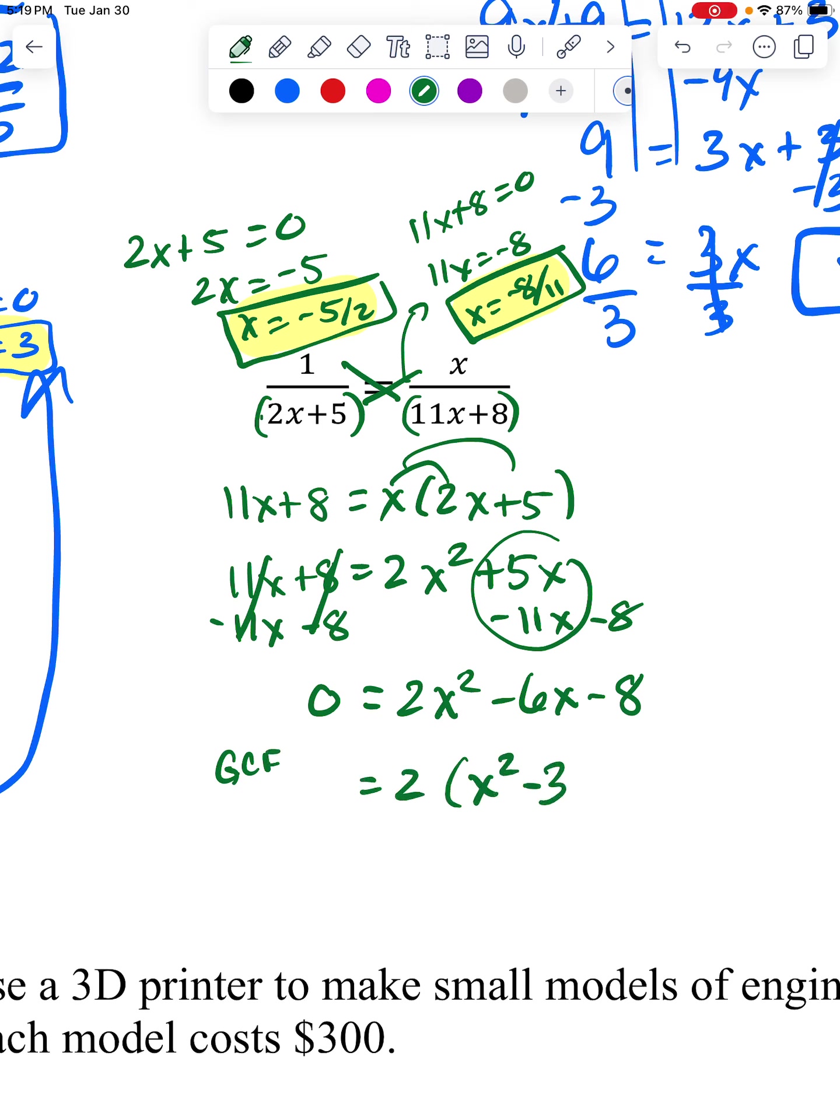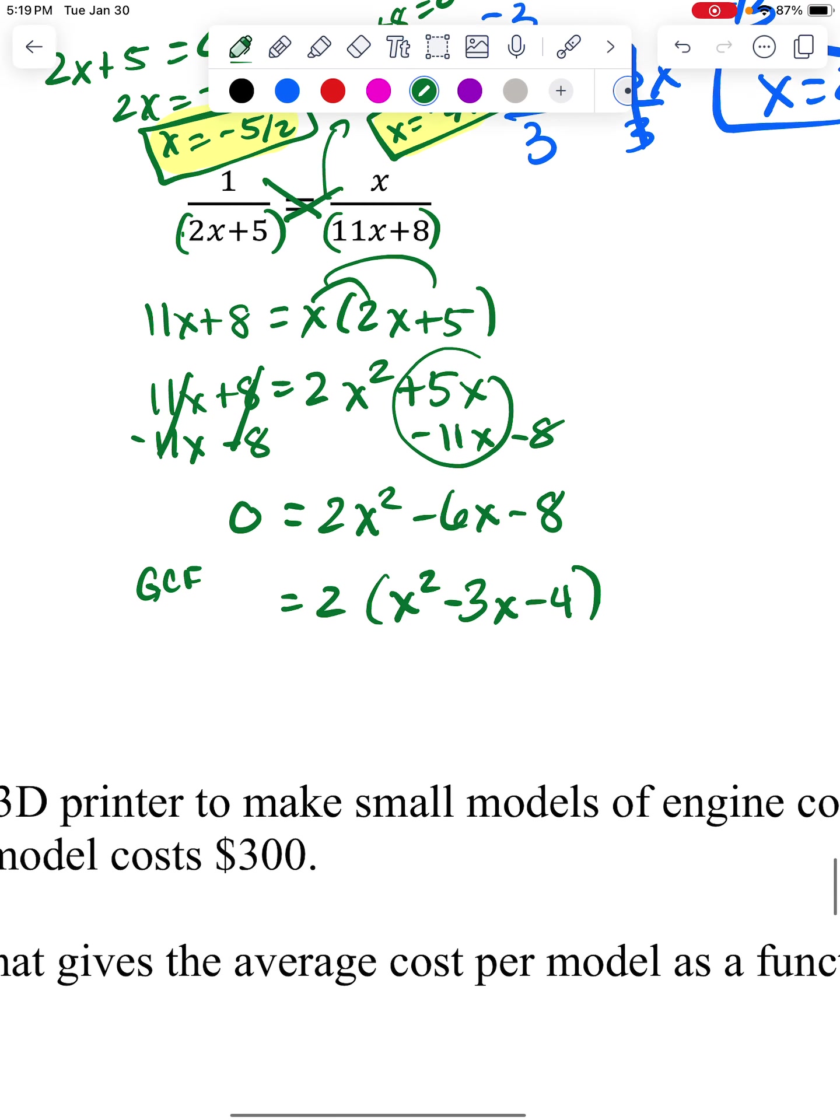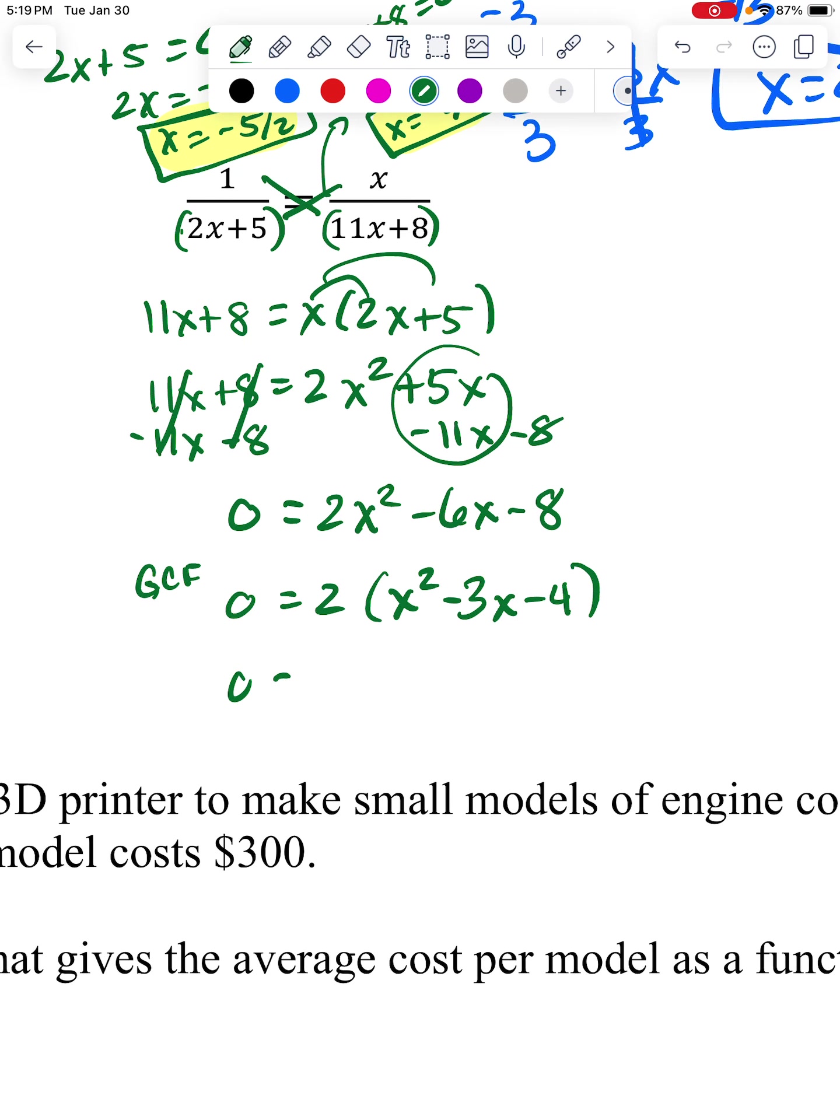because now I'm going to need 4 in a way that subtracts to be 3. And my options are 1 times 4 or 2 times 2. So the one that subtracts to be 3 will be 1 times 4. To get a negative 3, I need a minus 4 plus 1.